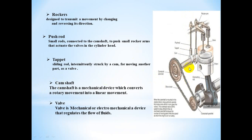Number four: the camshaft. The camshaft is a mechanical device which converts a rotary movement into a linear movement. Its main function is to convert rotary movement into linear movement by using an applied wheel.